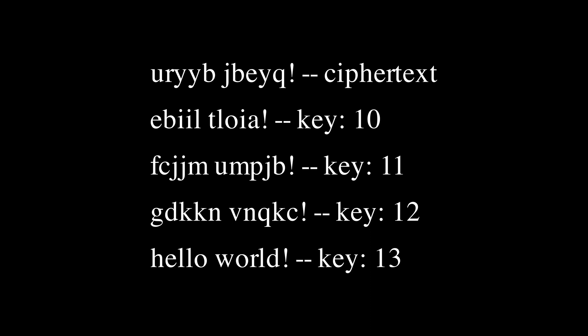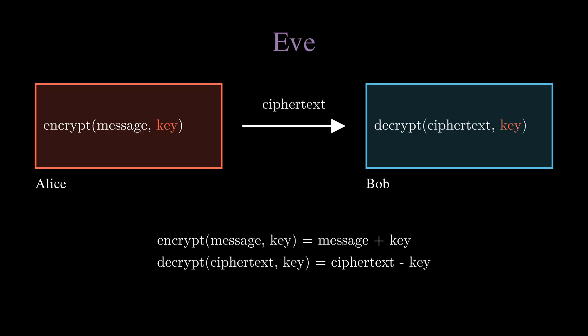Now returning to Alice and Bob, the fact that they both use the same key is what we call symmetric encryption. This method is secure and also fast with a good algorithm, but they have to somehow agree on the key in the first place.